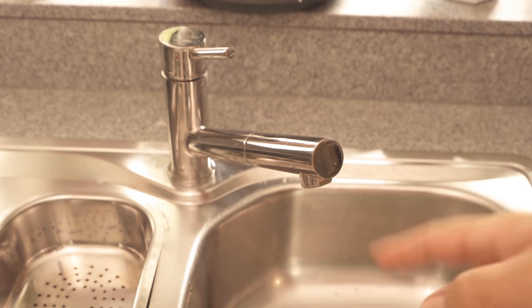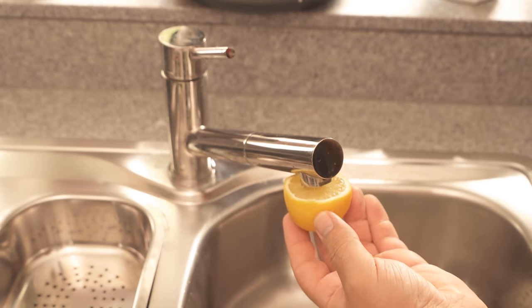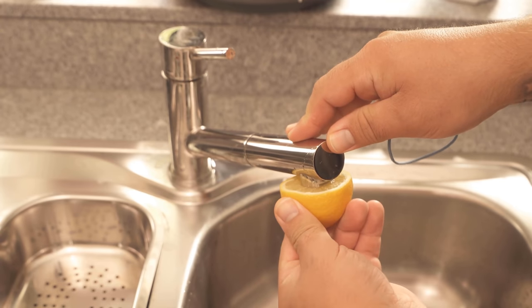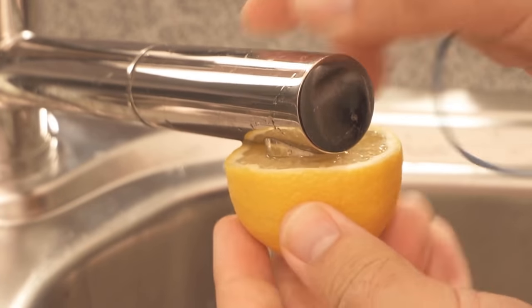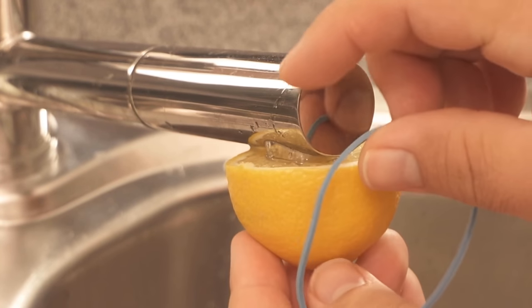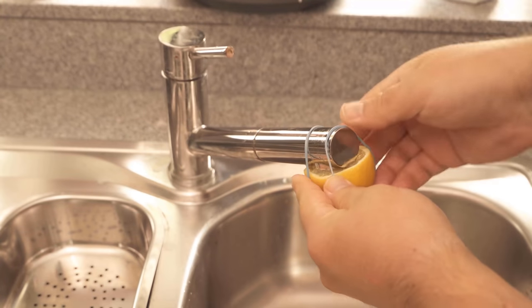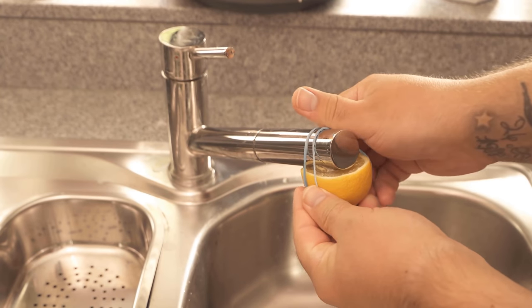For this I take a lemon, cut it once in the middle and now I have to put it under the tap. Later in the video I show you the incredible result. I squeeze the lemon in here so that the grime and the calcification really hang in the lemon.